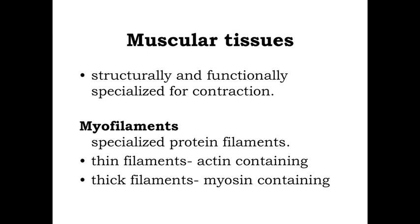We've talked about epithelial tissues where the cells are in close proximity to one another, and connective tissues where the cells are scattered and the intervening space is filled with extracellular material. Epithelial and connective tissues are grouped together anatomically, similarly in organization. Now we're going to look at muscular tissues as an example of a tissue grouped together based on its functional specializations.